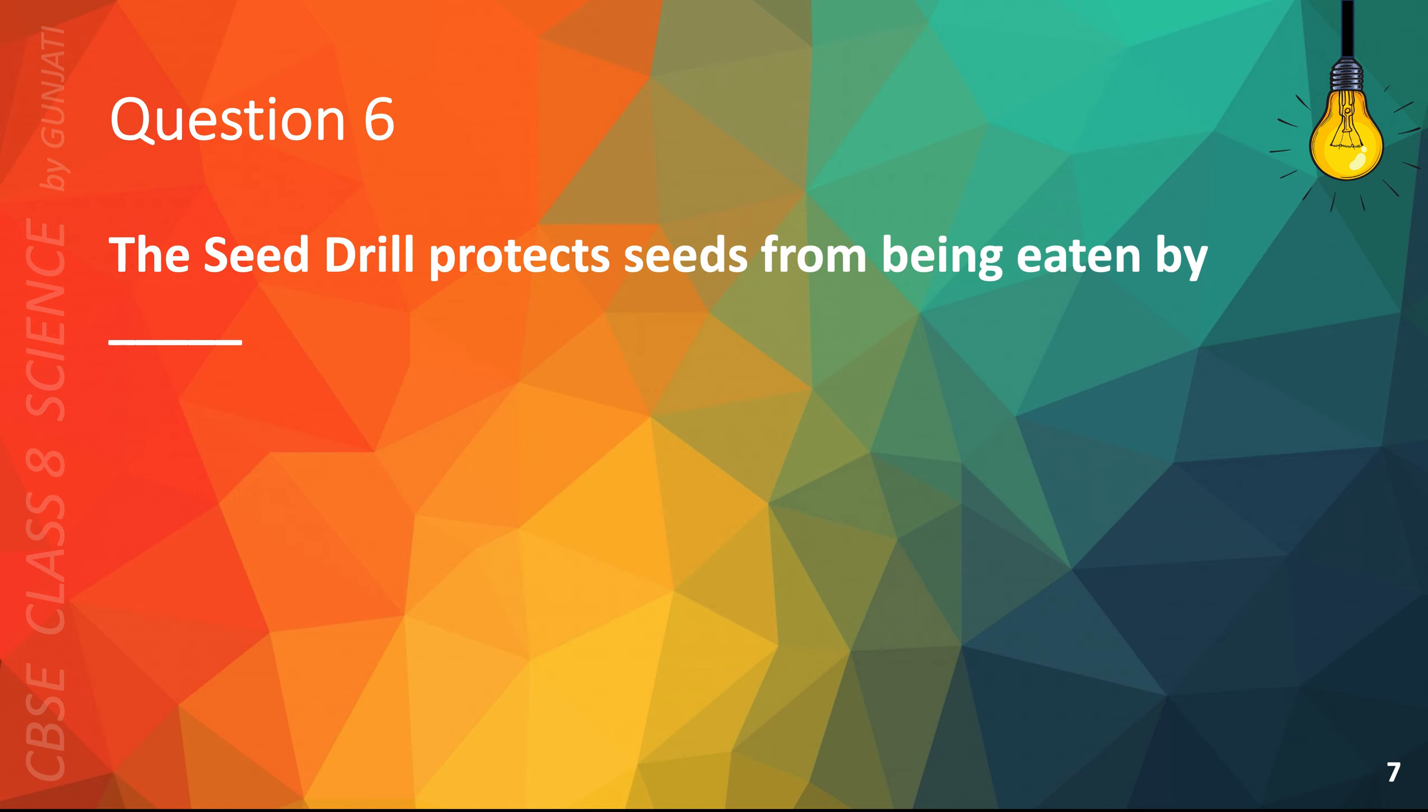Question 6. The seed drill protects seeds from being eaten by A fish, B dogs, C dinosaurs, or D birds. The correct answer is D birds.